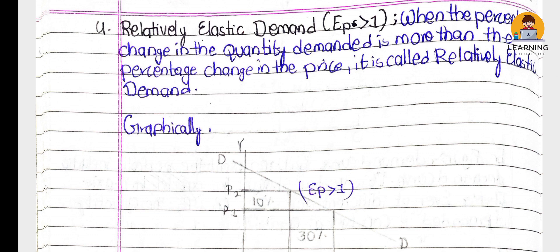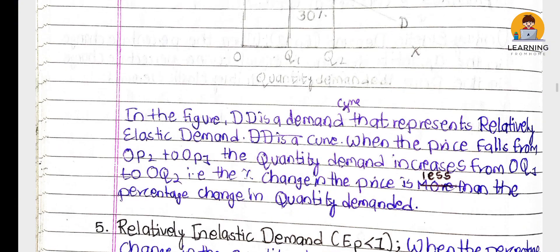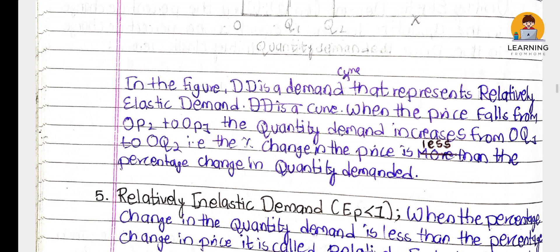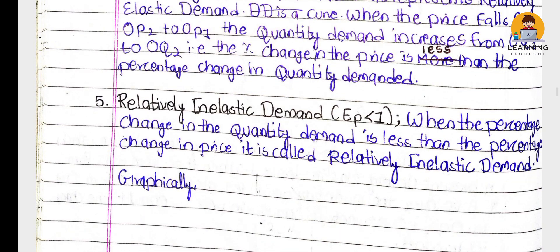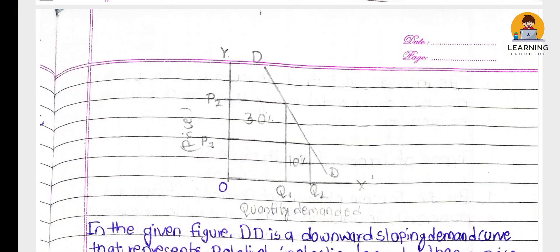The last type is relatively inelastic demand, which is the opposite of relatively elastic demand. For example, if quantity demanded changes by 10% but price changes by 30%, then quantity demanded change is less than the price change. So we have relatively inelastic demand.